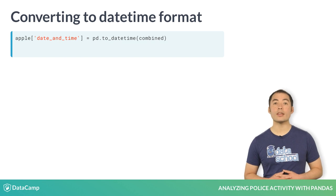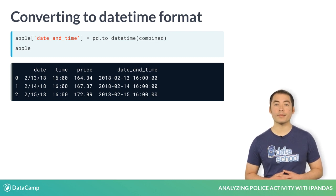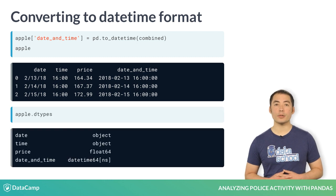Looking at the updated data frame, you can see that the new column contains both the date and time, and that it is stored in a more standard way. From the dtypes attribute, you can see that the new data type of the new column is date-time instead of object.